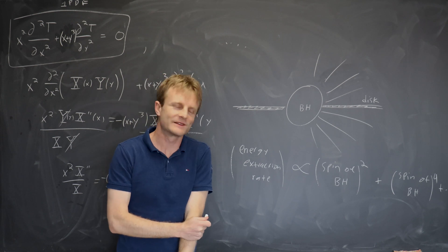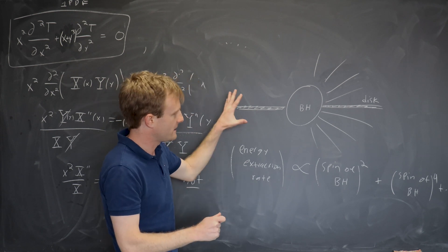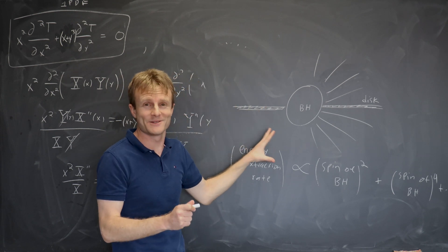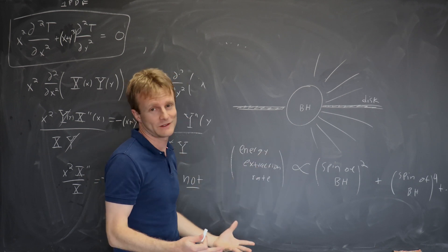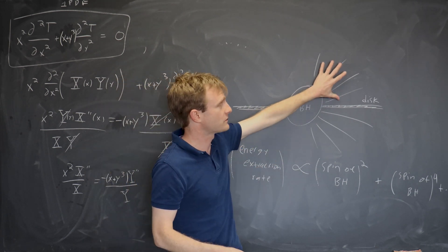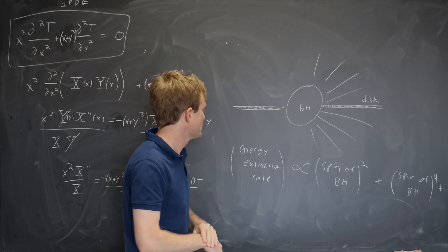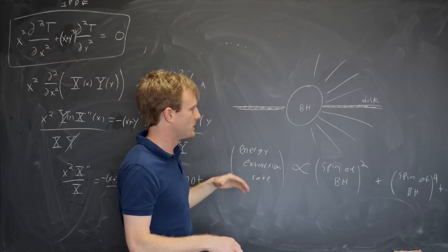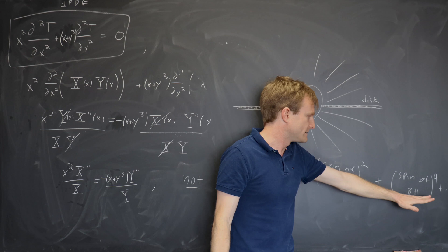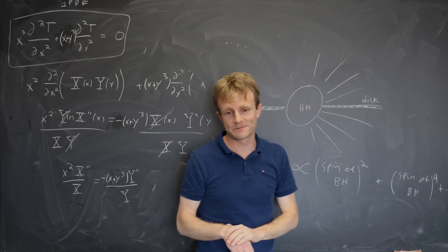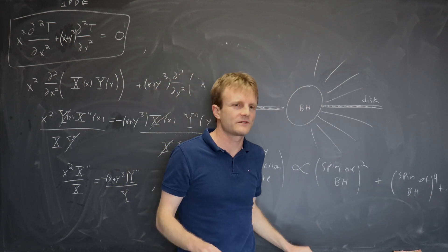So what we did in this paper is we resolved that issue. Exactly how we did it is beyond the scope of the lecture. But the point is there's a partial differential equation you have to solve here. And the partial differential equation you have to solve for the structure of this magnetic field is separable. And we needed all of those product solutions to write down the solution to the next order.